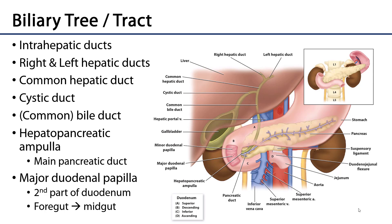So let's take a look at how bile is conducted. Bile canaliculi feed into intrahepatic ducts. The intrahepatic ducts coalesce into left and right hepatic ducts. Where the left and the right hepatic ducts come together is the common hepatic duct. The common hepatic duct is going to meet the cystic duct, which has bi-directional movement of bile between the common hepatic duct and the gallbladder.